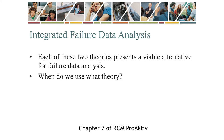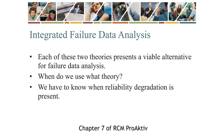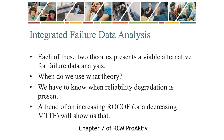One might say it is logical — use renewal theory to model the replacement of a single simple component, and use repairable systems theory to model complex systems. The problem is that many units consist of two or more components: are they components or systems? Also, at the other extreme, there are parts of systems such as subsystems and subunits — are they systems or components? The answer is that we must know if there is degradation or not. We must determine if there is an increasing trend in the ROCOF of the unit. If so, repairable systems theory is applicable; if not, renewal theory applies. So it is not so much what the unit is, but how it behaves in terms of repeated failure that determines which theory should apply.